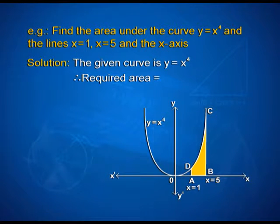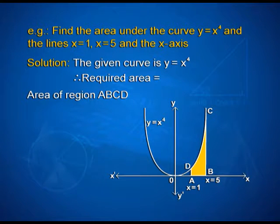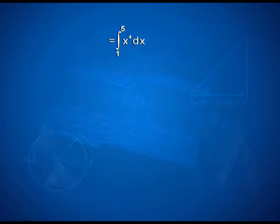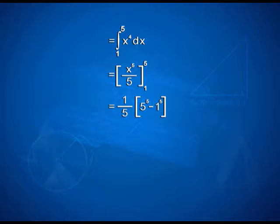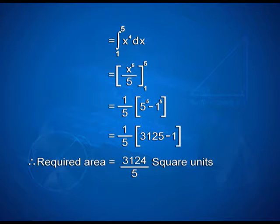Therefore, the required area is equal to the area of the region ABCD, that is equal to the integral from 1 to 5 of y dx, which equals the integral from 1 to 5 of x⁴ dx, giving x⁵/5 with limits 1 and 5. On applying limits, we have (1/5)(5⁵ − 1⁵) = (1/5)(3125 − 1). Therefore, the required area is 3124/5 square units.